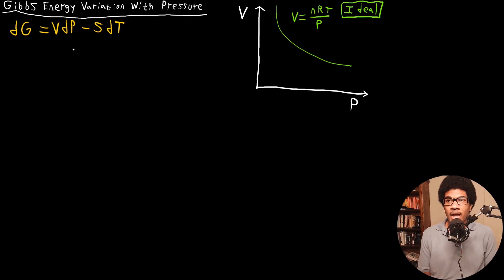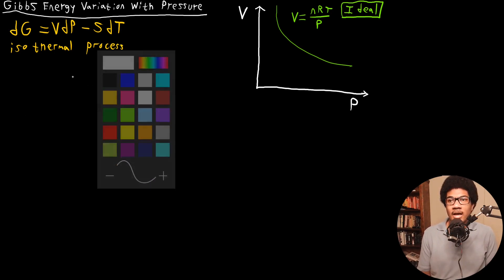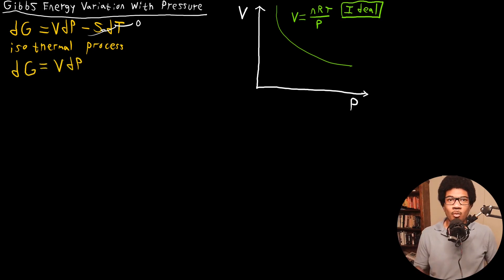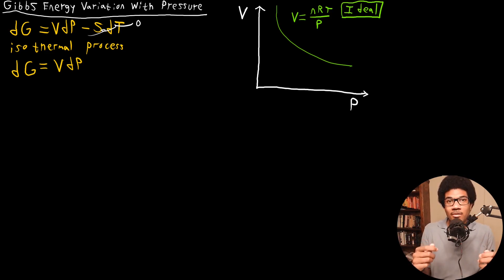Let's say that we have an isothermal process. If we know the process is isothermal, that means there's no temperature change, so dT is going to be zero and this entire term drops out. That means the Gibbs free energy only depends on a change in pressure. Importantly, when making these generalizations with these differentials, we're not assuming anything about our gas — not the van der Waals equation, not the ideal gas law. For an isothermal process this is true for the Gibbs free energy, full stop.